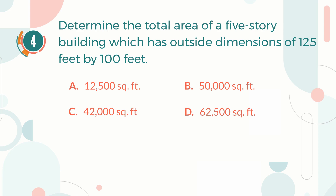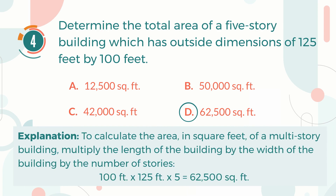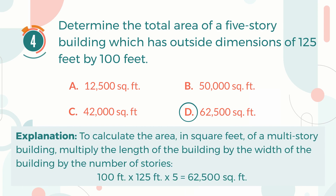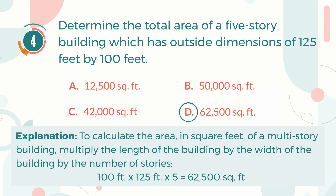The correct answer is D. 62,500 square feet. Explanation: To calculate the area in square feet of a multi-story building, multiply the length by the width by the number of stories. 100 feet multiplied by 125 feet, then multiplied by 5, equals 62,500 square feet.